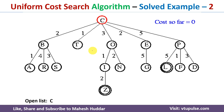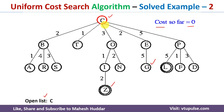In this case, we have been given a graph with multiple nodes. C is the root node, and Z and G are the goal nodes. In the uniform cost search algorithm, we set the cost to 0 initially and the open list is set to the root node.